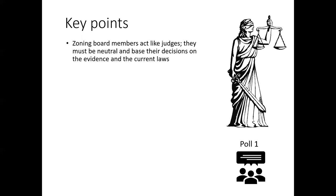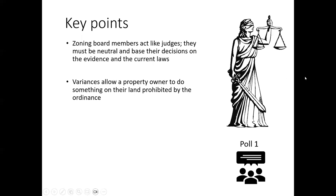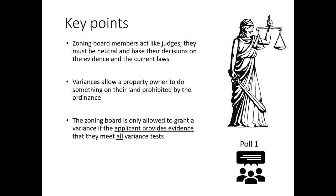While you answer the poll, I'll go through some key points for tonight's presentation. First, zoning board members' role is really to act like judges — they should be neutral and base their decision on the evidence and current laws. Second, variances, by definition, allow a property owner to do something on their land that's prohibited by the zoning ordinance.